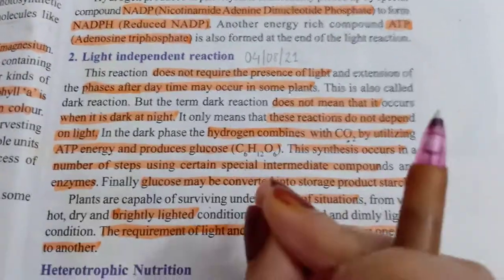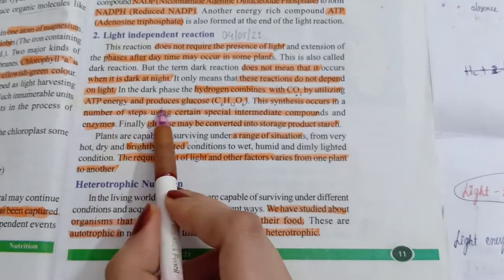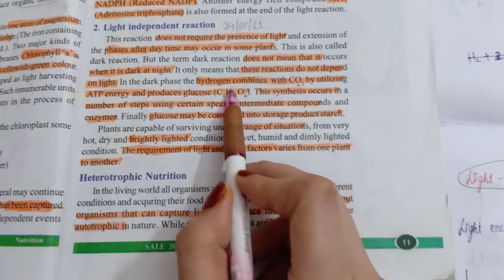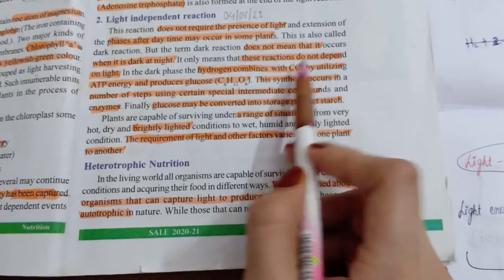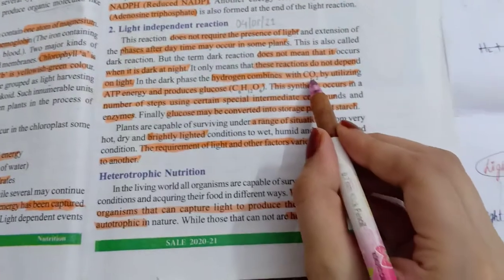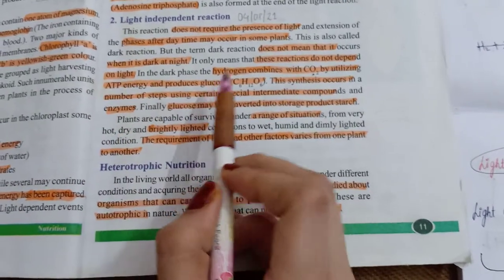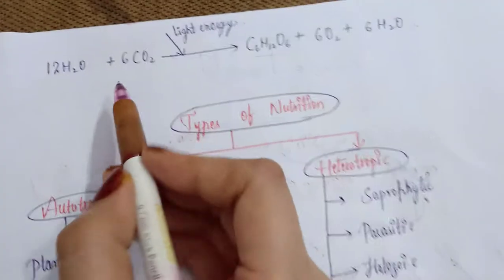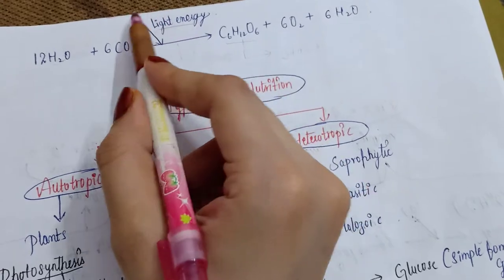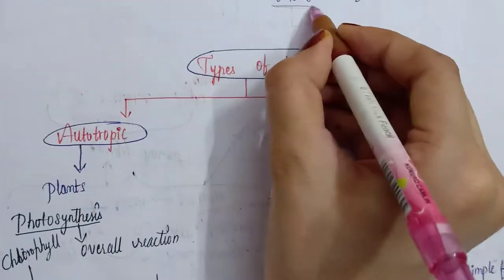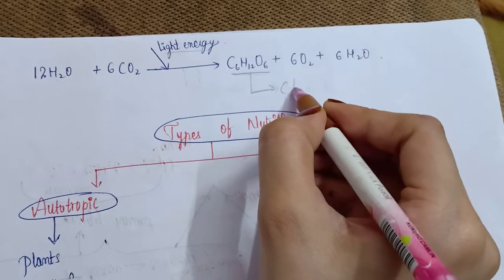In the dark phase, hydrogen combines with carbon dioxide by utilizing ATP energy and produces glucose, that is C6H12O6. The hydrogen present in the plant combines with carbon dioxide from the air, uses ATP energy — which comes from light energy from sunlight — and produces glucose. After that, the glucose is converted into starch in plants.